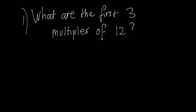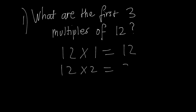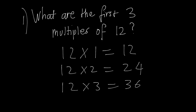For example, what are the first three multiples of 12? We do the same thing: 12 times 1 is 12, 12 times 2 is 24, and 12 times 3 is 36. The same principle applies — start off with 12 multiplied by 1, then 24, then 36.